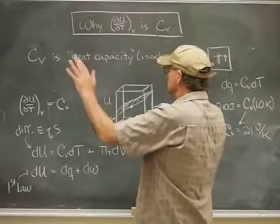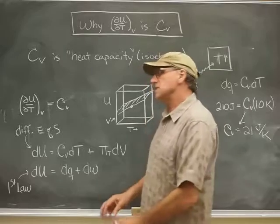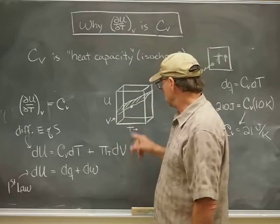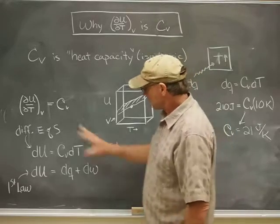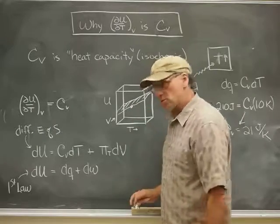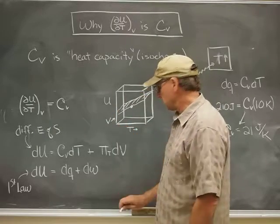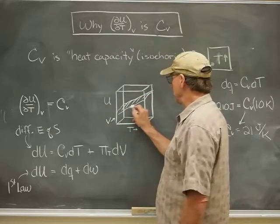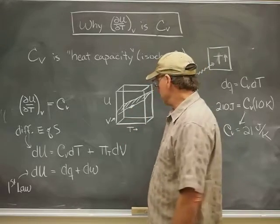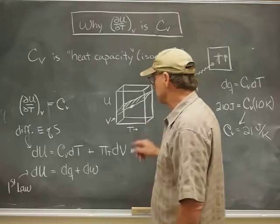So that's the heat capacity. What does this have to do with these geometric pictures of U as a state function? Well, what we've argued before is that the slope of U in a state space of temperature and volume - the slope in the temperature direction - we gave it a name and called it CV.